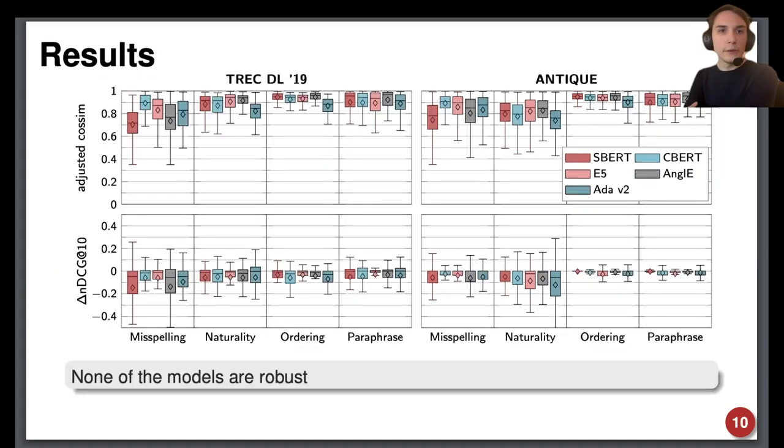To conclude, we find that none of the embedding models we tested were robust as embedding models or ranking models. Simply scaling up the transformer architecture seems to improve robustness as E5-Mistral shows, but interestingly E5 is least robust to naturality, possibly because it was pre-trained on fully formed natural language text.